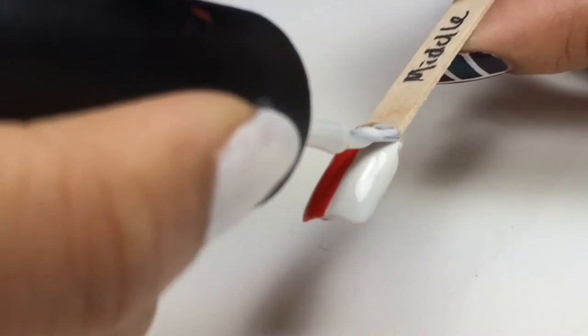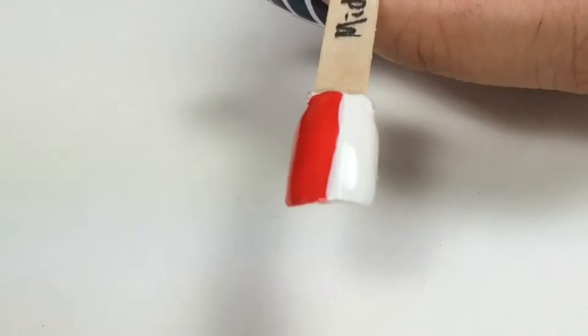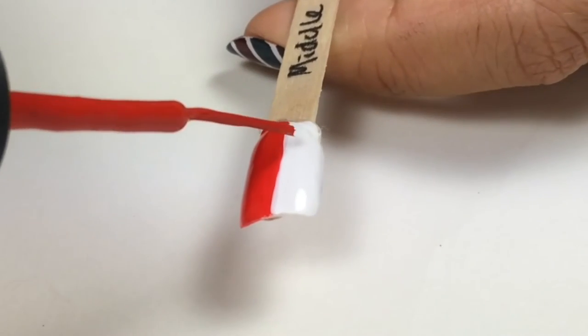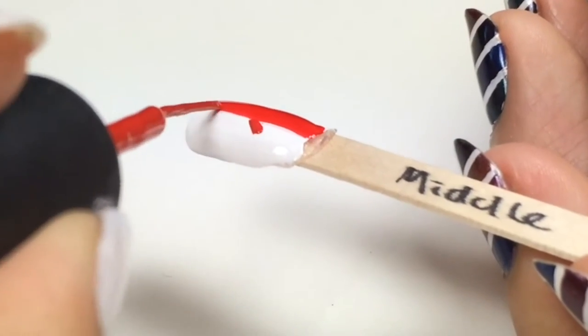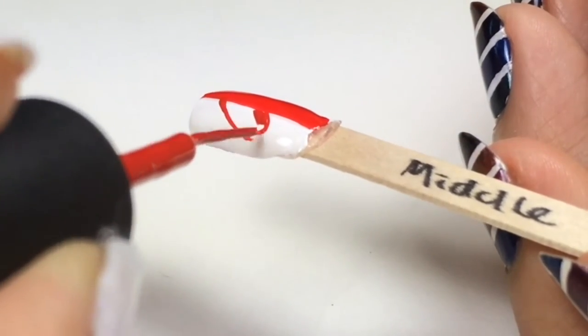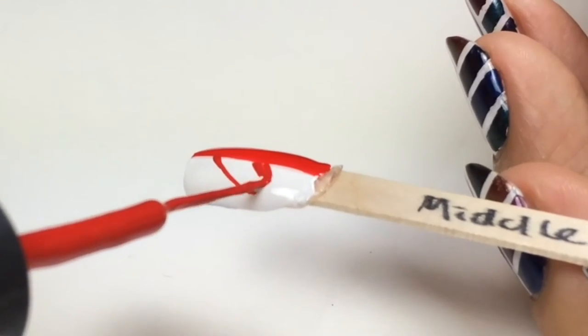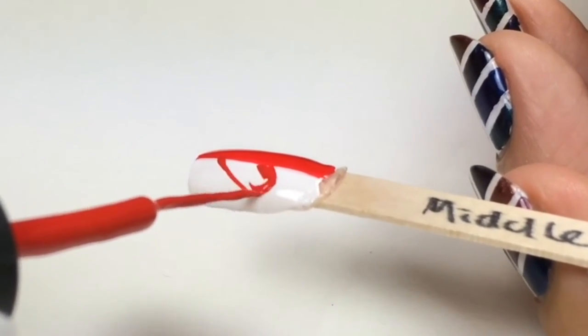I first painted each half. With Salon Perfect Nail Art Liner, I'll create half of a heart, then I'll fill it in.